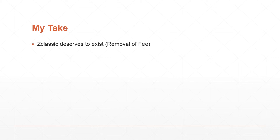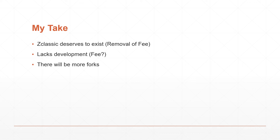Here's my take on Zclassic. I do think Zclassic deserves to exist because it removes the founder's fee, which does create some centralization in the coins — removing it helps ease that concern. I also think Zclassic lacks development because of the removal of the founder's fee, and I think a way to solve this is to create a decentralized autonomous organization, kind of like Dash. I also think there will be more forks of Zclassic in the future, and personally the ideal price to buy in would be around $5 to $10.